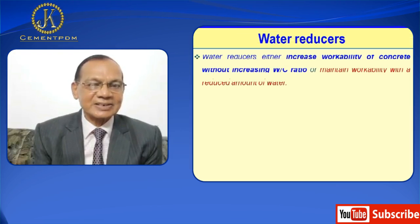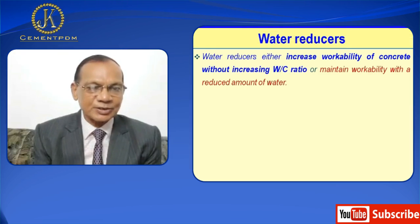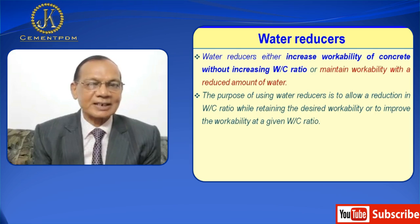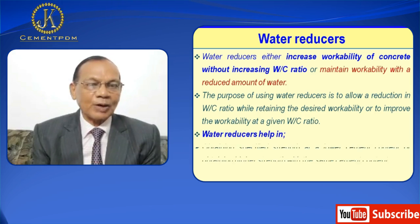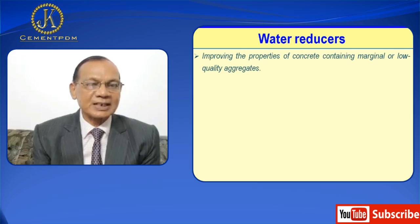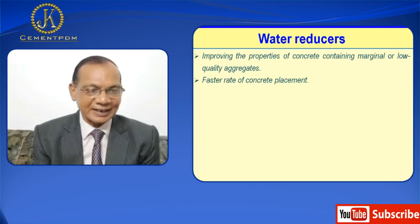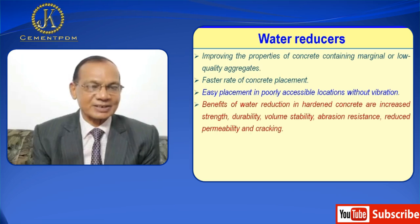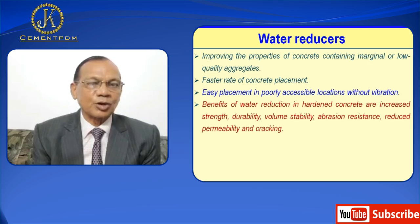Water reducers either increase the workability of concrete without increasing the water-cement ratio, or maintain workability with a reduced amount of water. Their purpose is to allow a reduction in water-cement ratio while retaining desired workability, or to improve workability at a given water-cement ratio. They help in obtaining specified strength at a lower cement content or higher strength with the same concrete mix, improving properties of concrete with marginal or low quality aggregate, achieving faster rate of concrete placement, and easy placement in poorly accessible locations. Benefits in hardened concrete include increased strength, durability, volume stability, abrasion resistance, reduced permeability, and reduced cracking.